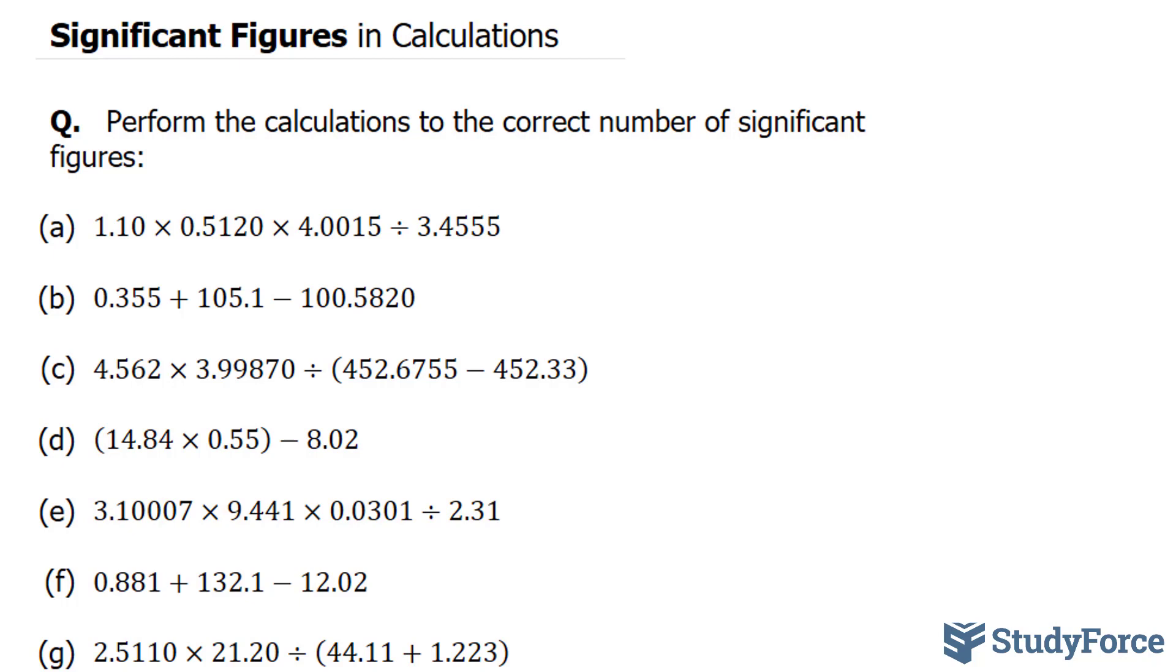When it comes to multiplying and dividing numbers, you have to take into account the number with the least amount of significant figures. So your final answer needs to have three in this case.